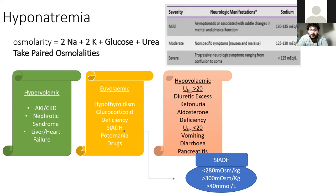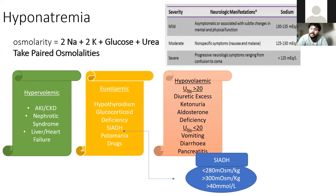You can calculate the osmolality yourself at the bedside — the formula is 2 times the sodium plus the fasting glucose plus the urea. The normal serum osmolality is roughly 285 milliosmoles per kilogram. You want to compare the paired plasma and urine osmolality — they should be like for like. If one is low, the other should be low; if one is high, the other should be high. When they're discordant, that gives you a picture of possible diagnoses such as SIADH.